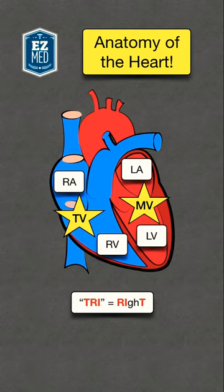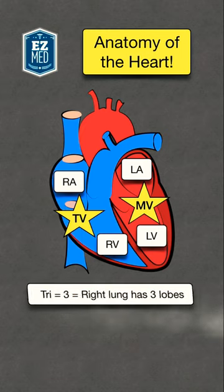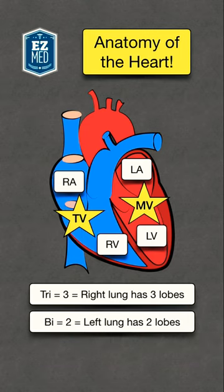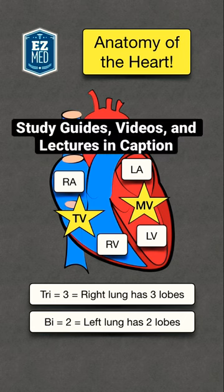Finally, you can use the lungs as a reference. The right lung has three lobes, and 'tri' means three, so the tricuspid is on the right. The left lung has two lobes, and 'bi' means two, so the mitral or bicuspid valve is on the left.